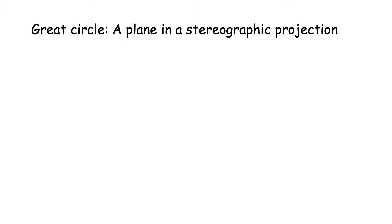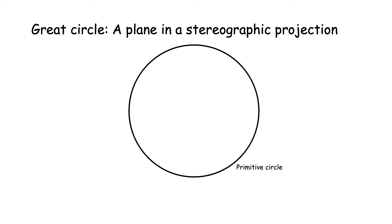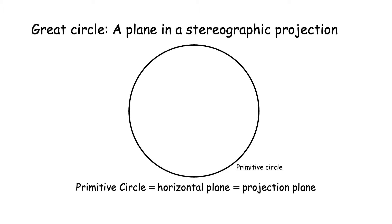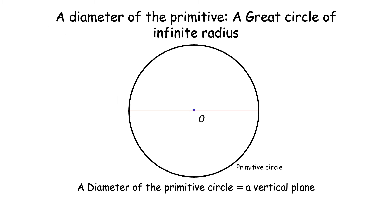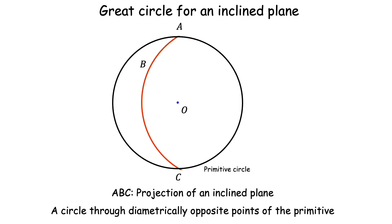A great circle is the projection of a plane in a stereographic projection. The most important great circle in any stereographic projection is the primitive circle — it is the projection of the horizontal plane or the projection plane itself. The diameter of the primitive circle is another important great circle; it is a great circle of infinite radius and it represents a vertical plane.